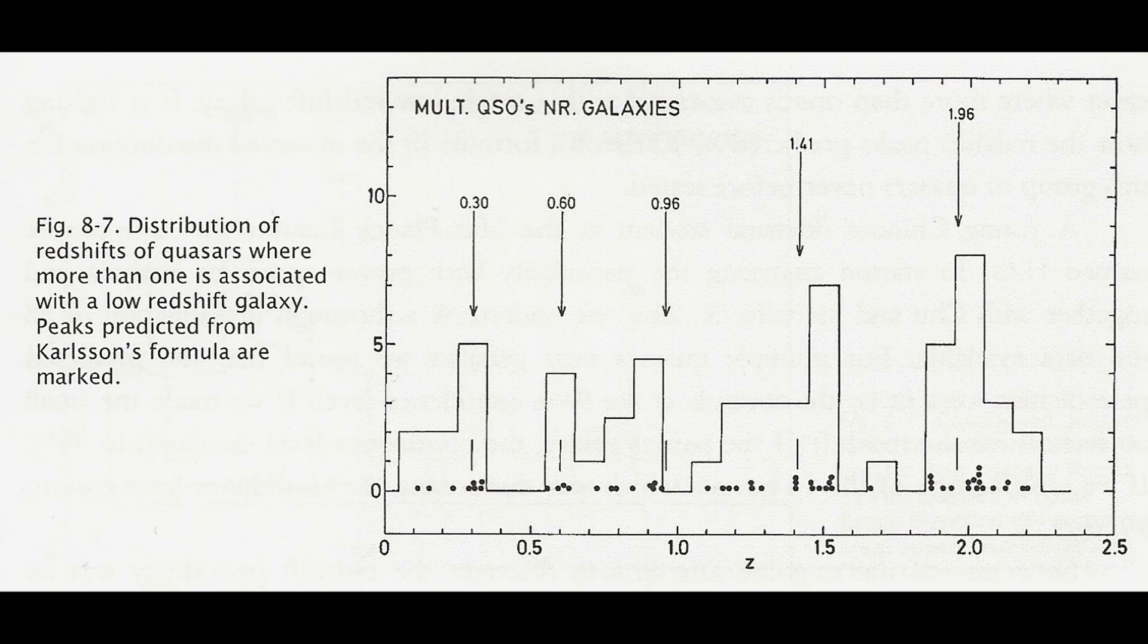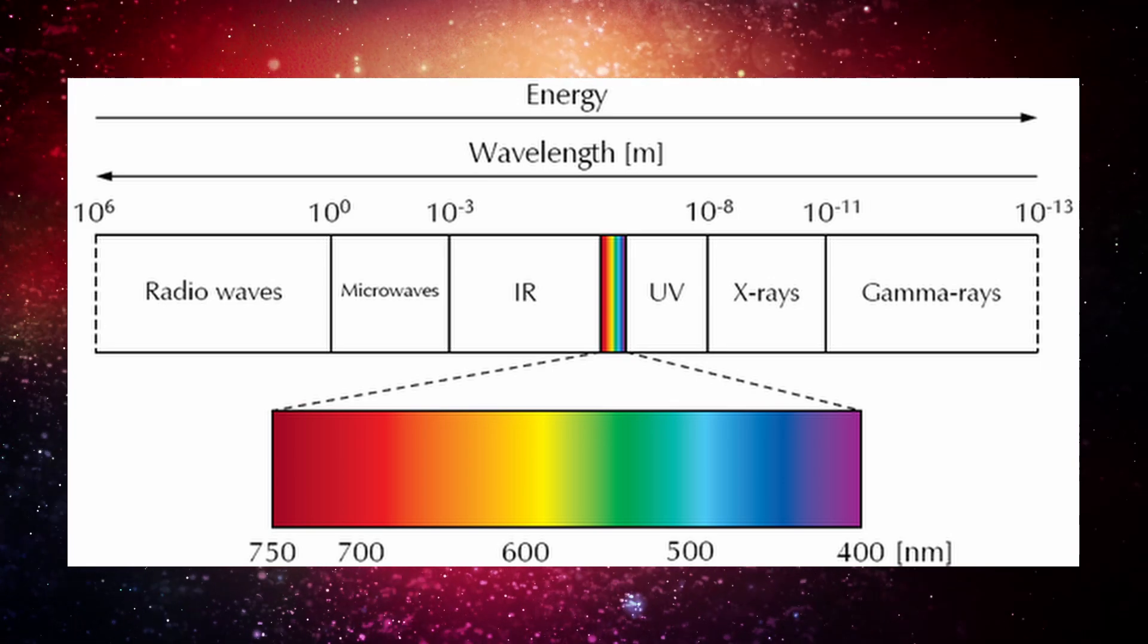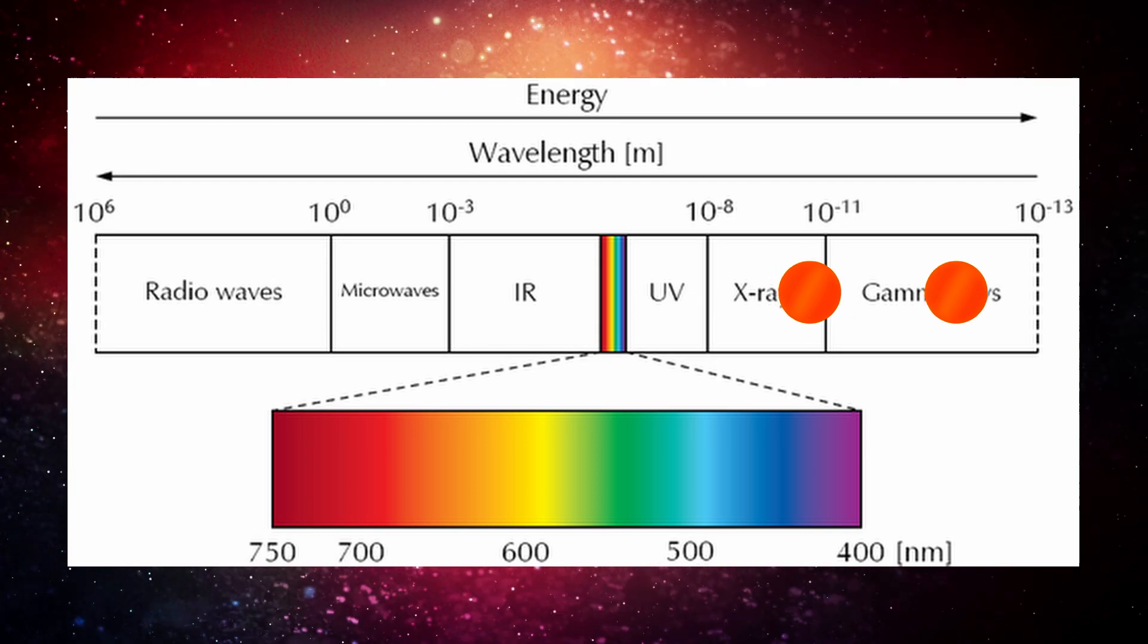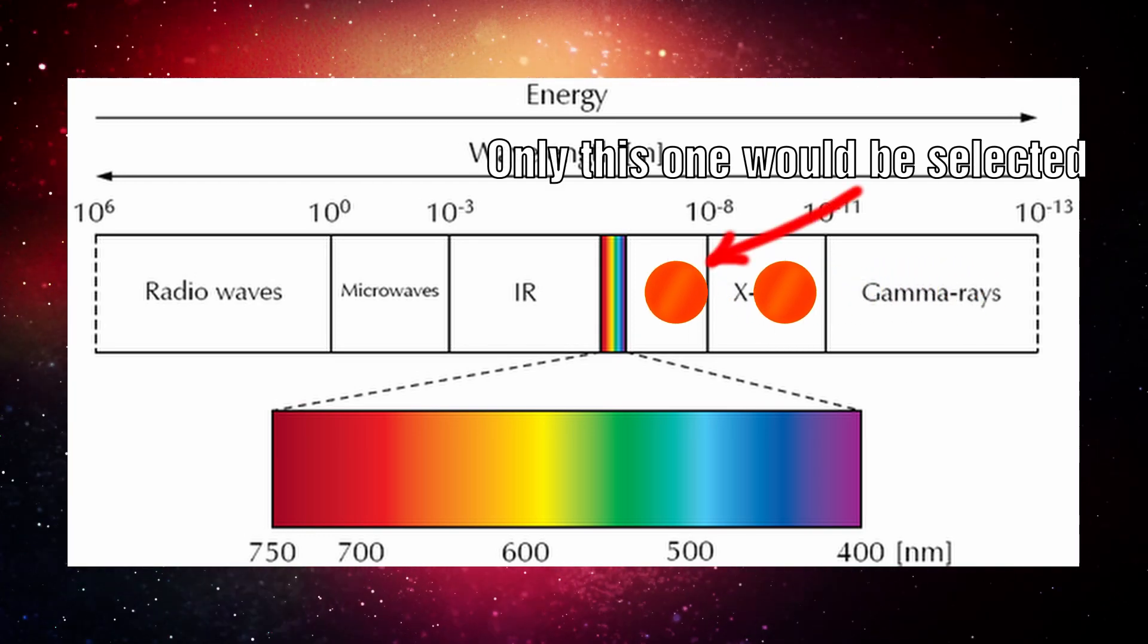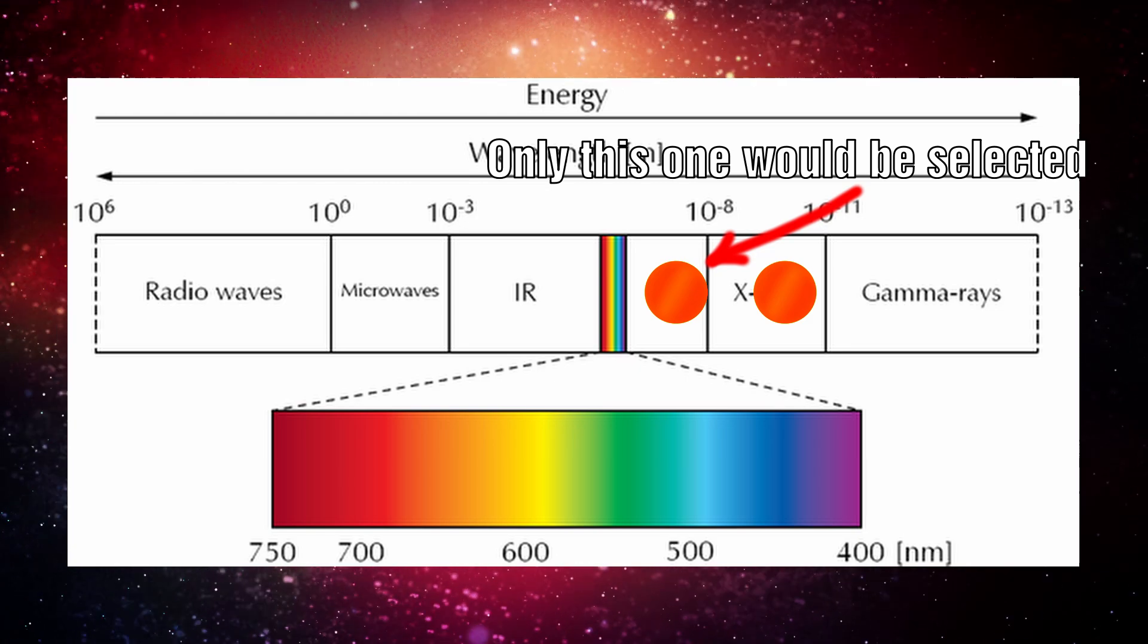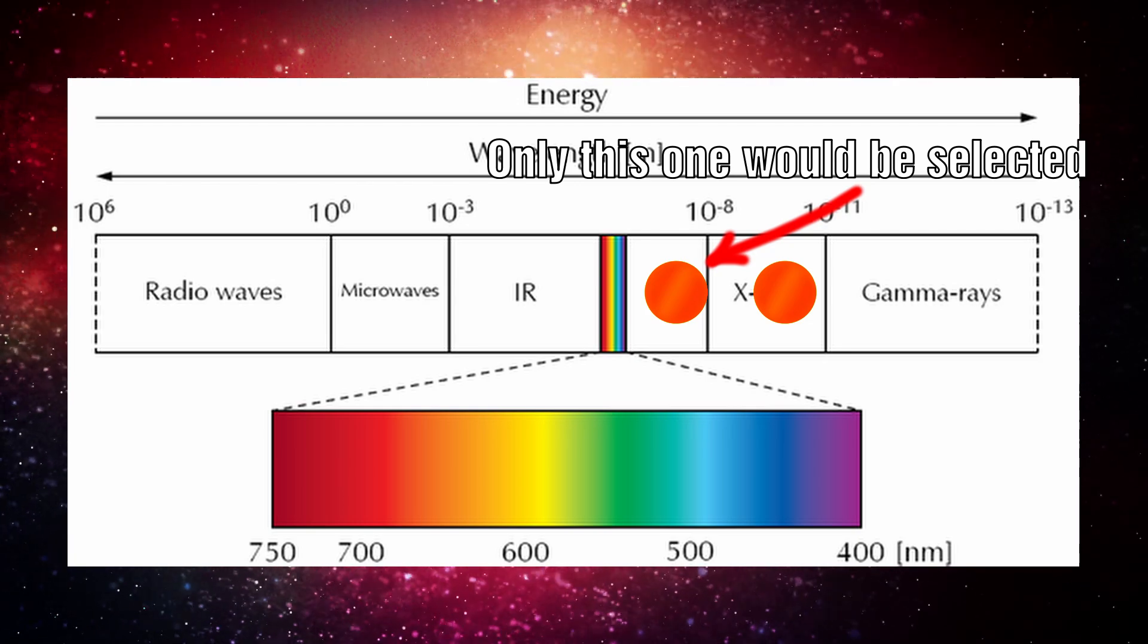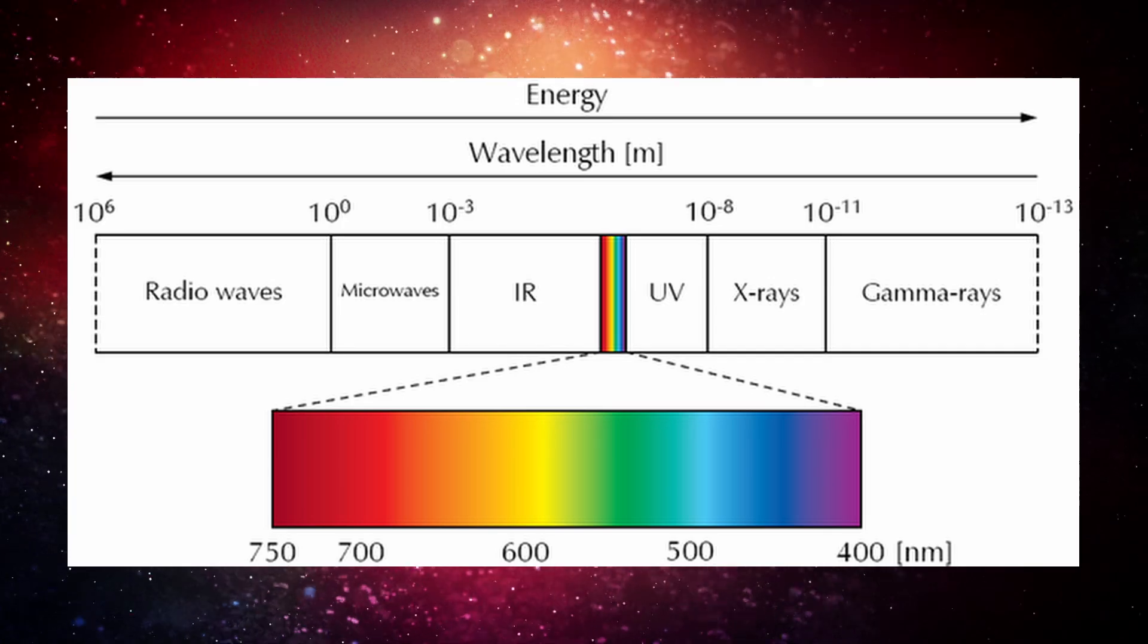One of the attempts to discredit the redshift periodicity is centered on the argument that quasars were discovered by their ultraviolet excess and that the excess was caused by predominant emission lines moving into the ultraviolet window at certain redshifts and hence that this selective effect was causing what appeared as periodicity. However if one examines quasars which were discovered via their radio emissions then the same pattern appears.